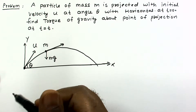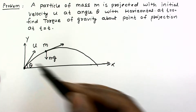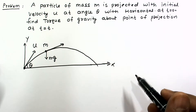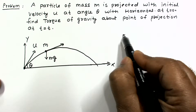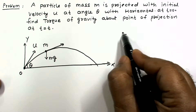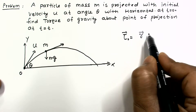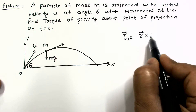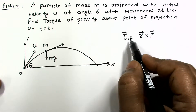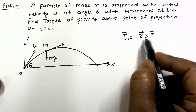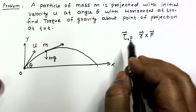This is the point of projection and we have to find the torque about this point. For finding the torque we have many options. One option is: suppose this is point O, so for torque about O, we can find the r vector, we can find the force vector, and we can then compute the cross product of r and F.